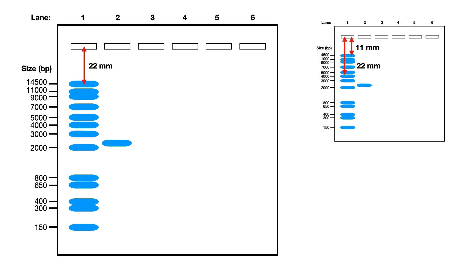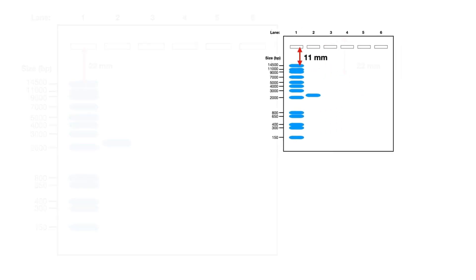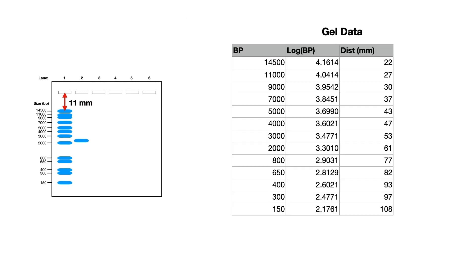In fact the distance is now 11 millimeters. So what do we do in this particular case and does it make a difference to our final answer? Well if we take that gel and we do as we did with the slightly larger version, we've got our base pairs, we've got our logs, and we've got our distances.